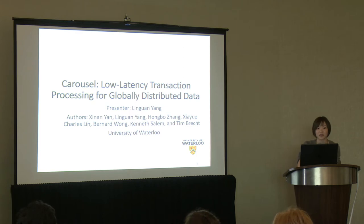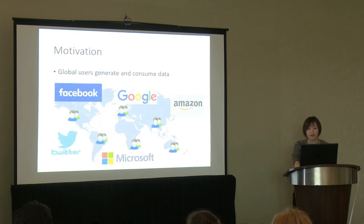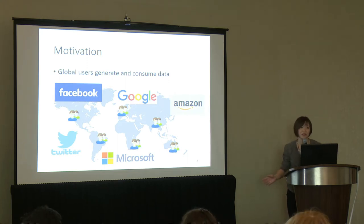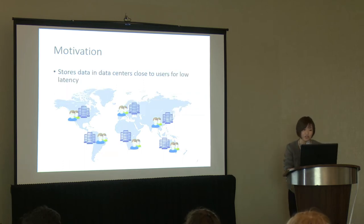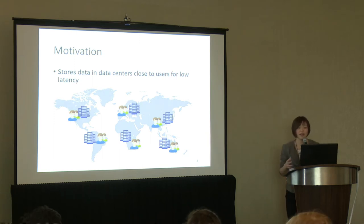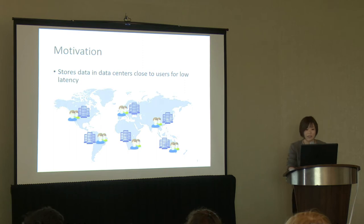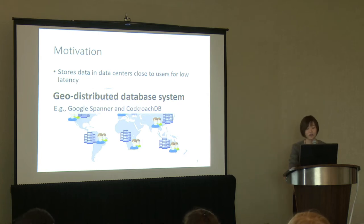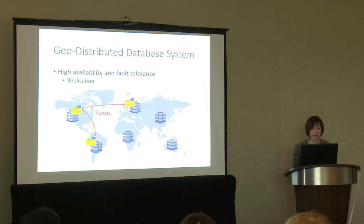This work was motivated by the increasing number of applications and services that have global users. This includes services we use every day such as social networks, search engines, and cloud services. One of the key challenges to provide these services is to ensure that users have low latency. One approach is to build a data center close to the user and serve them from nearby data centers, which leads users to generate data from different parts of the world. To manage this data, one way is to make use of a geo-distributed database system such as Google Spanner or CockroachDB.